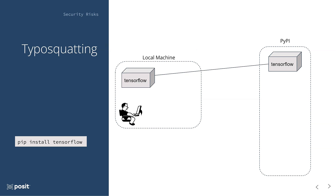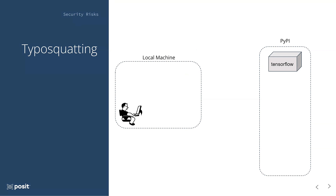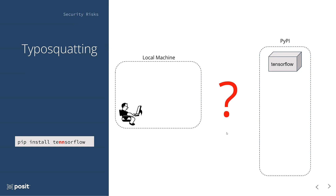Pip goes out to PyPI, looks for a package called TensorFlow, downloads it, and installs it into your environment. Perfect, everything's fine. But now let's start again in our clean environment. This time, when we try to install TensorFlow, we accidentally make a typo and add two N's in the name of the package — pip install tensorflow with two N's. Pip goes out, looks for it on PyPI, can't find a package by that name, and returns an error. You notice you mistyped the name, fix it, and try again. All is well.